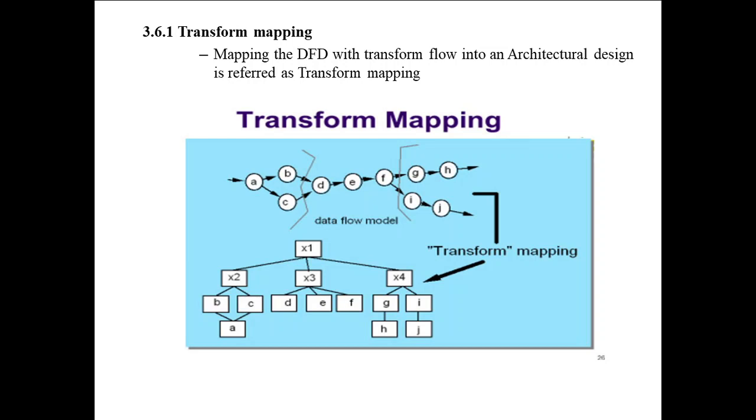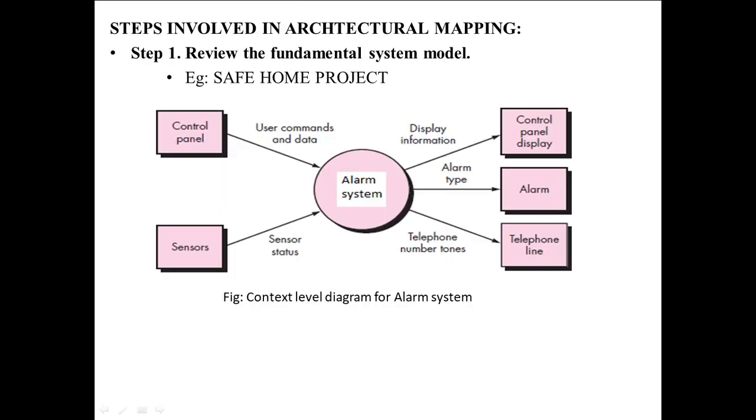Here, see the diagram. In the data flow diagram, it is transformed to a top-down approach - that is, architectural design. The steps involved in architectural mapping: Step 1 is review the fundamental system model. Draw the DFD diagram for the fundamental system model. Here, I am taking the alarm system, so this is a diagram for it.